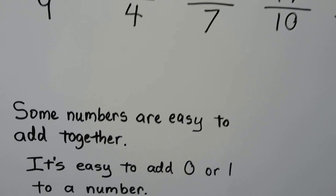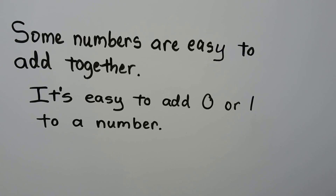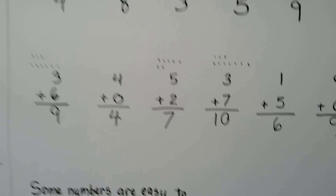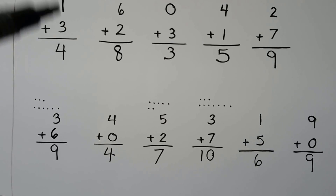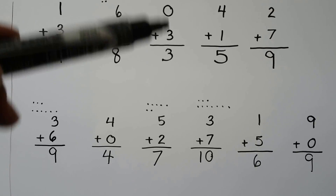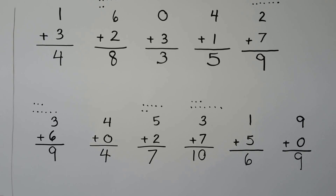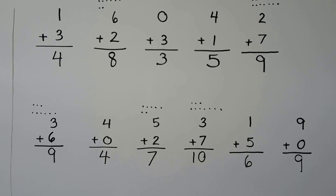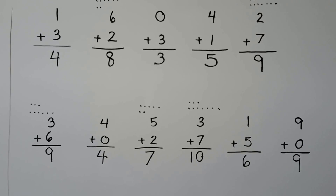Some numbers are easy to add together. It's easy to add zero or one to a number. When we did the equations that added zero or one, it was easy because the number stayed the same or we just went to the next biggest number when we add one. When we added the other numbers, we could use help like counting counters or dots. Whenever we add zero or one, it's easy.